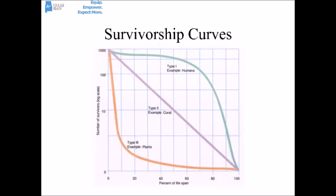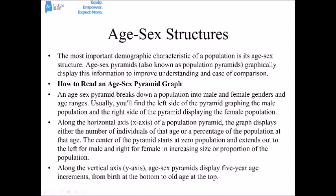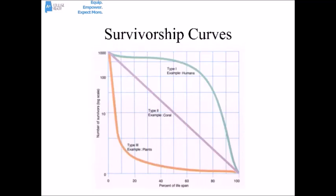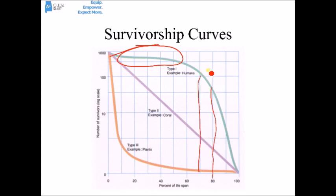Here's a type 1 survivorship curve. Notice that at the beginning of life, most of the organisms survive, because these organisms are usually providing a lot of parental care. But as the organisms age — somewhere around 70 to 80 — the mortality rate goes up dramatically, and the organisms die off very quickly until they eventually reach their maximum age range, at which point they're all dead.